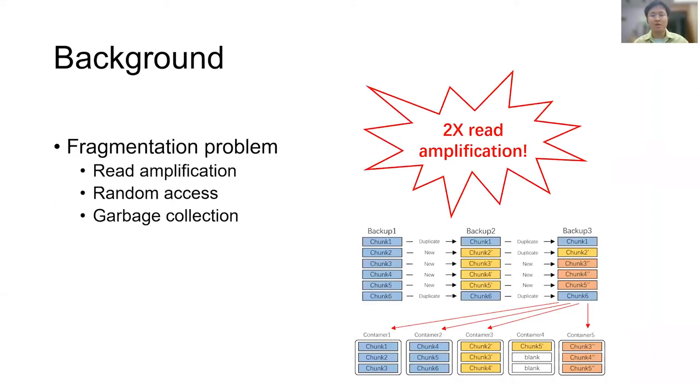The fragmentation problem leads to several negative consequences, including read amplification, random access, and garbage collection. Like the example on the right, when restoring backup 3, because of container-based IO, we have to load four containers for all required chunks. It causes a two-times read amplification, and we have to access four containers.